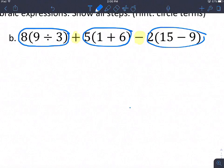So now I'm going to start to simplify what's inside my term. So looking at this first term, I have 8 multiplied by 9 divided by 3. And since 9 divided by 3 is in parentheses, I need to do that first. So 9 divided by 3 is 3, and this becomes 8 times 3, which is 24.